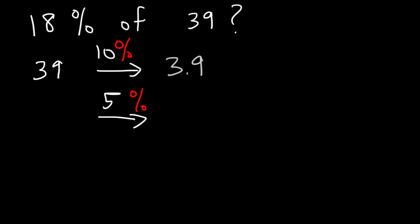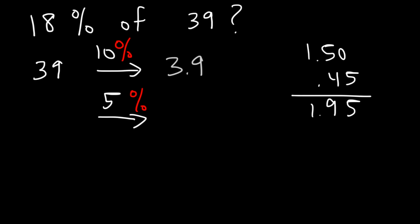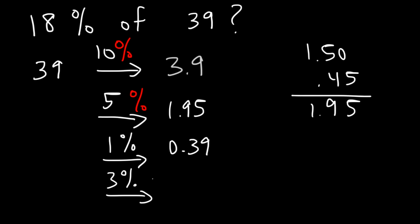5% is half of 10%, so what is half of 3.9? If you have $3.90 and split it two ways: splitting $3 evenly is $1.50, and splitting 90 cents evenly is 45 cents, so half of 3.9 is $1.95. Now for 1%: if 10% is 3.9, then 1% is 0.39. We need 3% because 15 plus 3 adds up to 18.